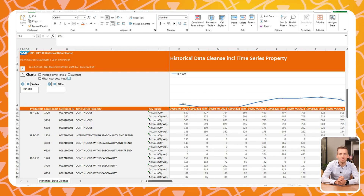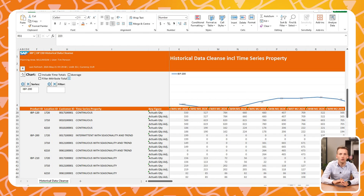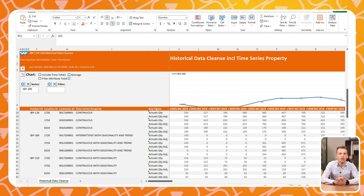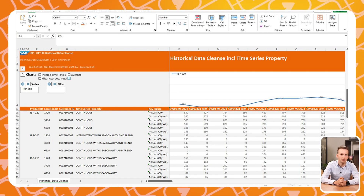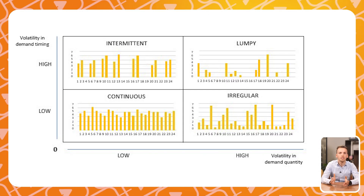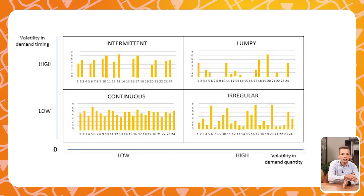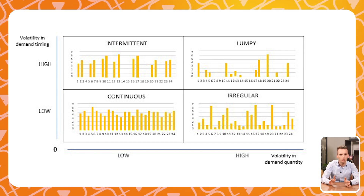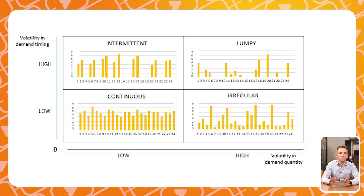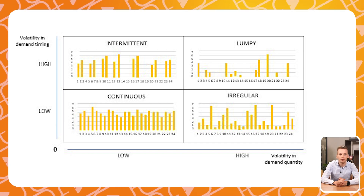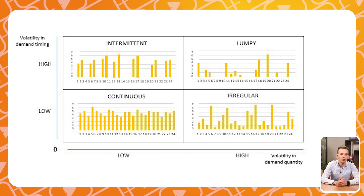SAP IBP for Demand introduces time series analysis with change point detection. Time series analysis is a statistical technique used to analyze and forecast data points collected over time. For example, in sales figures, time series analysis enables businesses to uncover hidden patterns and trends within their data, providing valuable insights for strategic planning and decision making. In the figure you can see different demand patterns — but what if one changes to another? Change point detection is a subset of time series analysis that focuses on identifying appropriate changes or shifts in the underlying structure of a time series dataset.